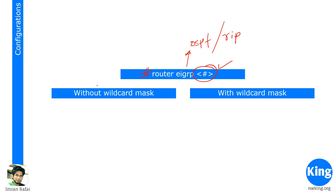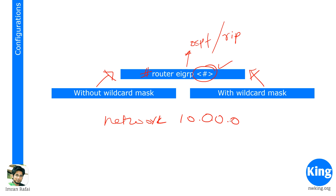There are two ways of giving the network command. Like every routing protocol, once you configure EIGRP you go inside and introduce the networks you want to advertise. One way is without a wildcard mask — you give a classful IP address like 10.0.0.0, and EIGRP will run on any interface starting with 10. Even if you enter a subnet address like 10.1.1.10, EIGRP will automatically convert it to the classful 10.0.0.0.